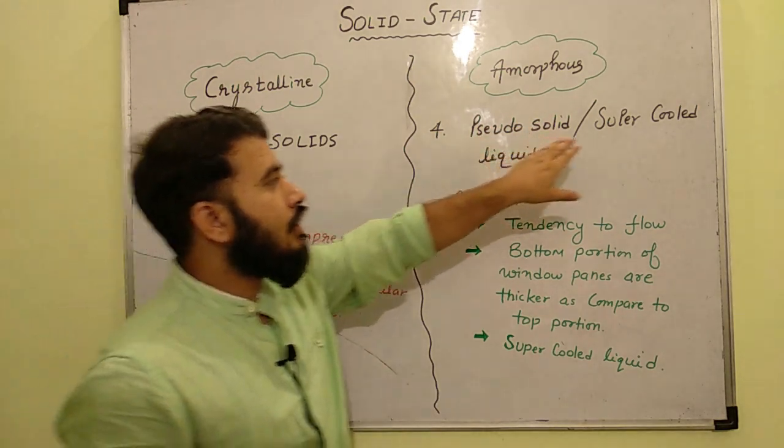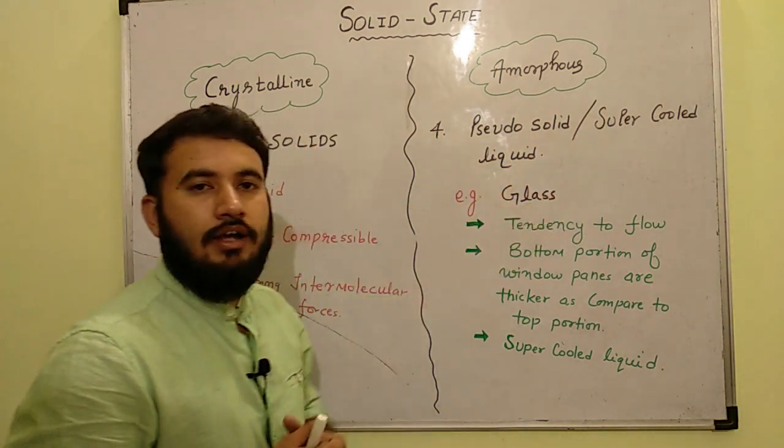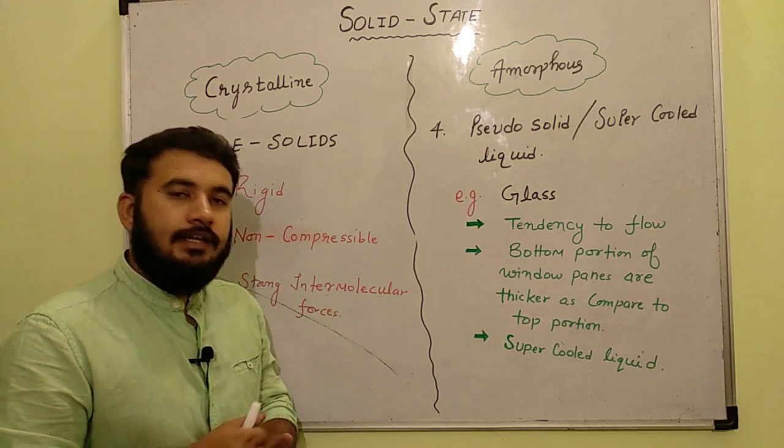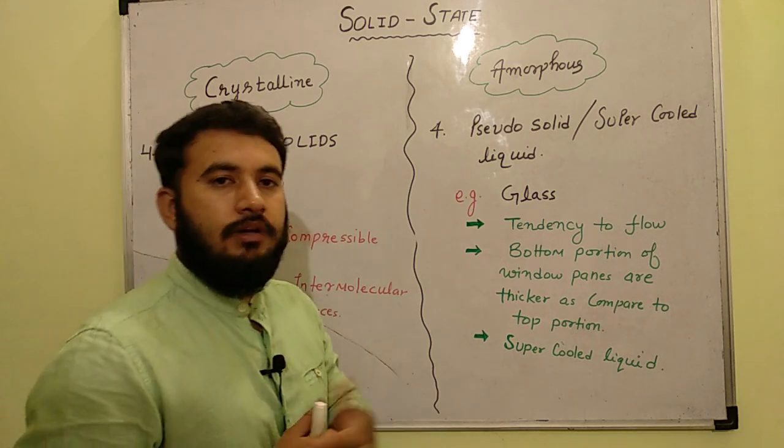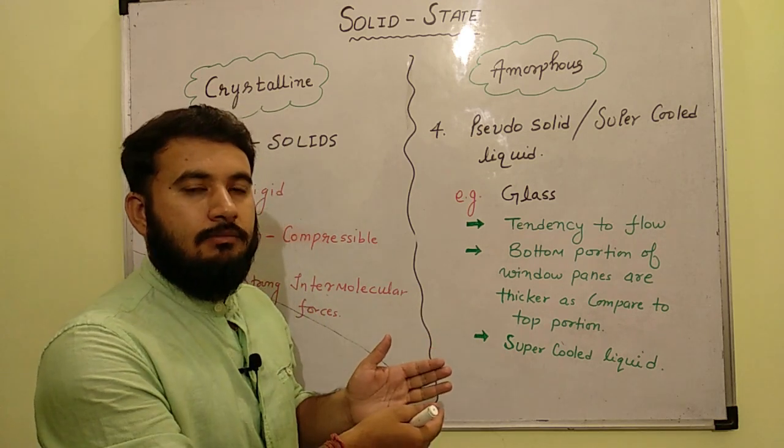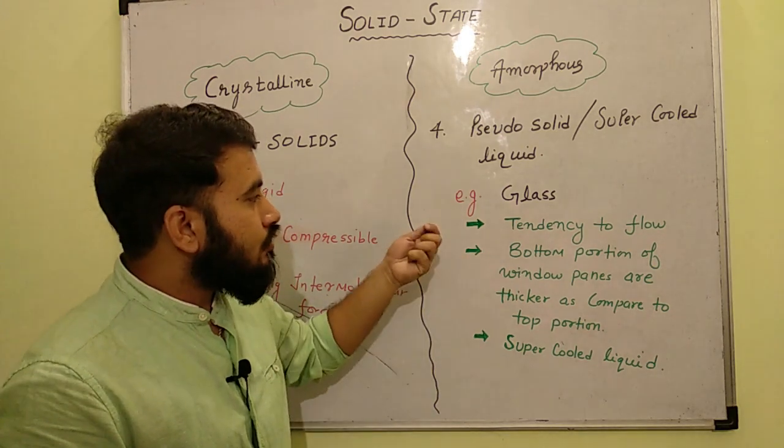Also they are known as super-cooled liquid. Super-cooled liquid, glass, which is called glass. Now glass has this type of property. So basically glass has a tendency. Because it is a super-cooled liquid, it is in a solid category, but amorphous solid in a category. And it has a property that is super-cooled liquid.